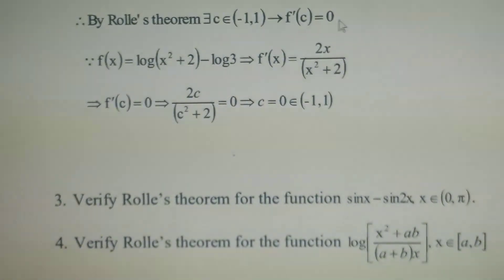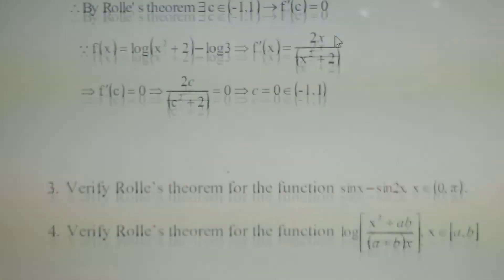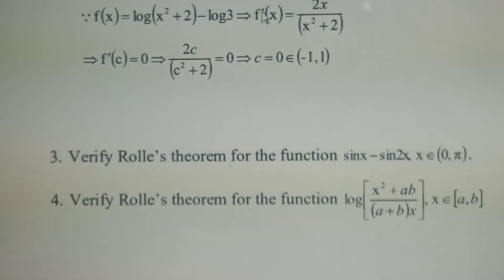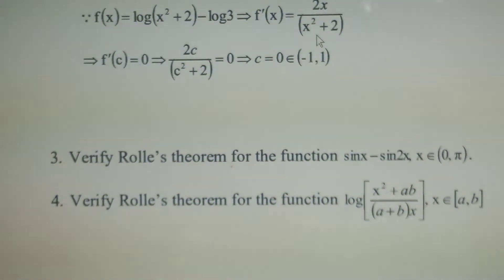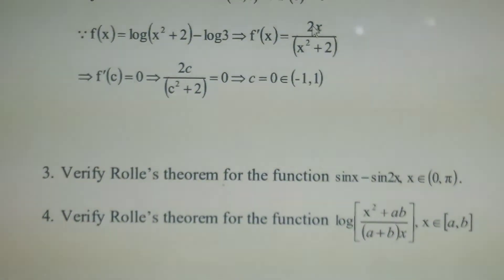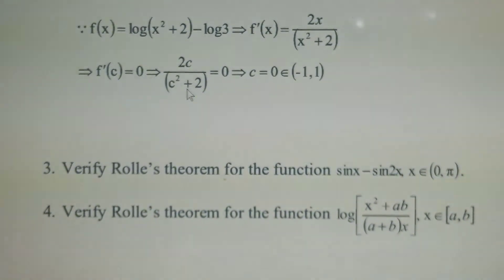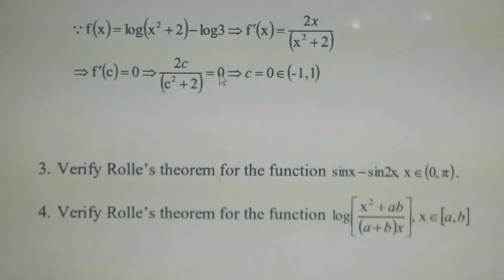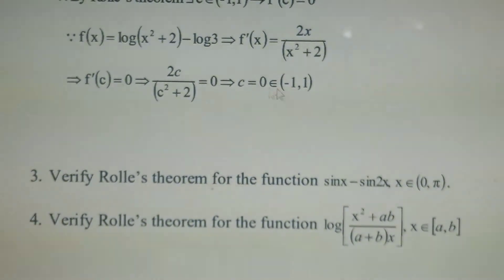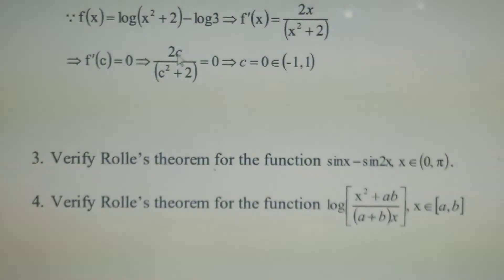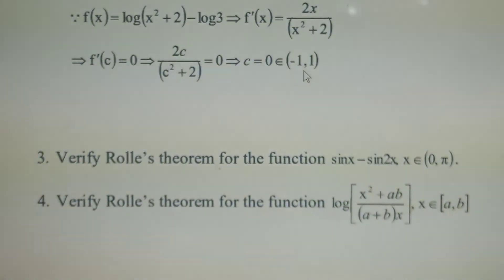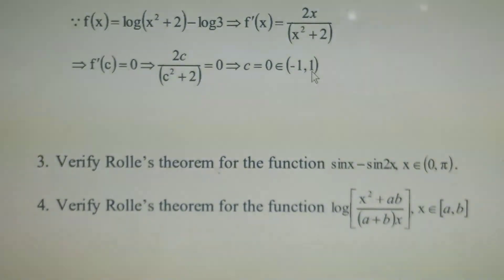Since f'(c) = 0 from the definition of Rolle's Mean Value Theorem, substitute: 2c/(c² + 2) = 0. Cross-multiplying gives 2c = 0, so c = 0. This value 0 lies inside the interval (-1, 1). Therefore, Rolle's Mean Value Theorem is verified for the function log(x² + 2) - log 3.